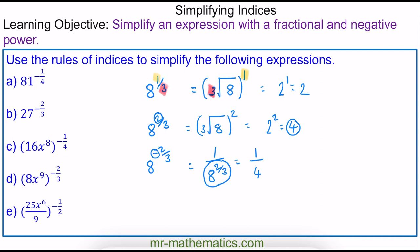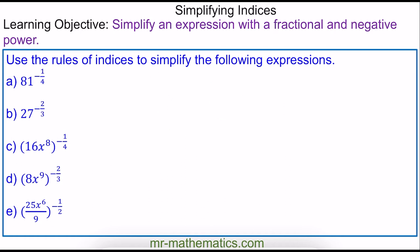So these are the rules for fractional and negative powers. Now we're going to use these rules to evaluate questions A to E. For question A, we have 81 raised to the power of negative 1 quarter. The negative means 1 over, or the reciprocal, of the fourth root of our base which is 81, raised to our numerator which is 1. The fourth root of 81 is 3, and 3 to the power of 1 is 3, so this becomes 1 third.